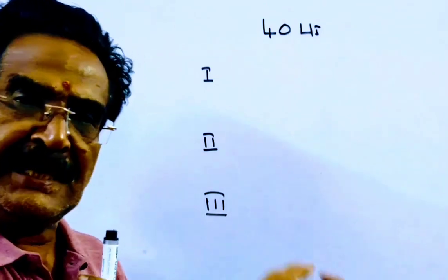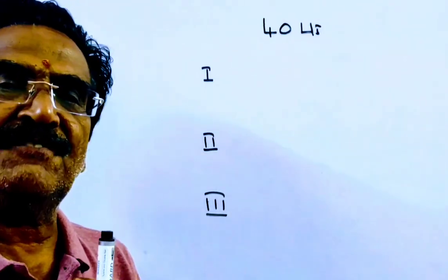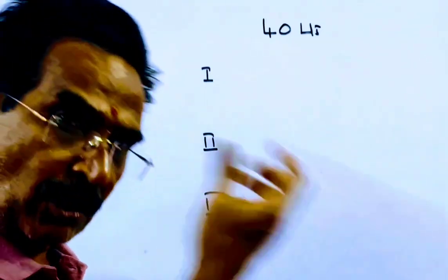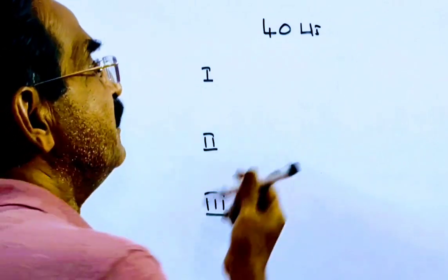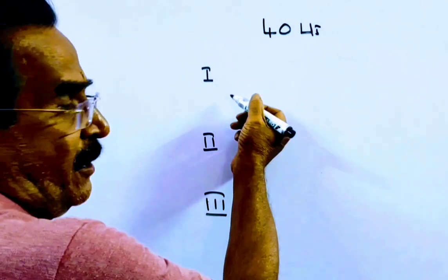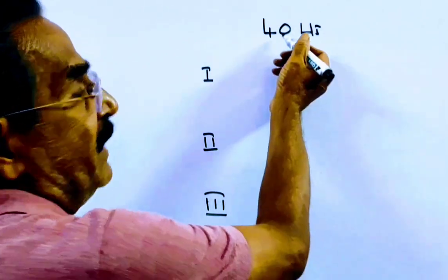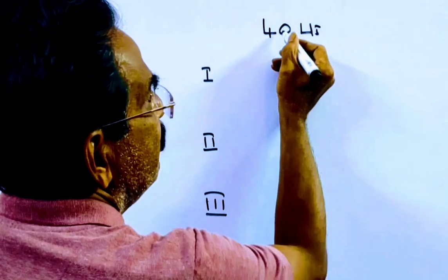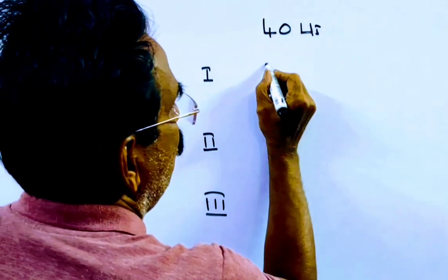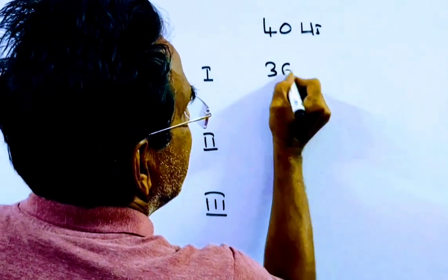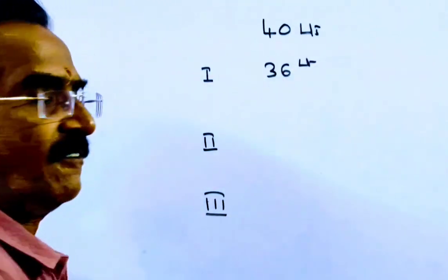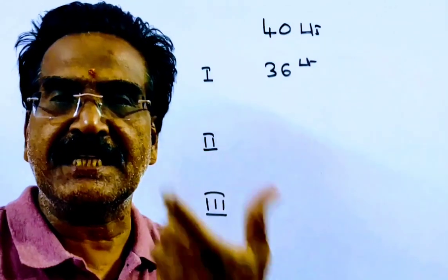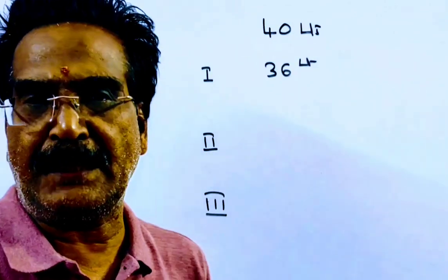That means every time 1 tenth of the remaining milk will be drawn out. After the first operation, 1 tenth of 40 is 4 liters. So 40 minus 4 equals 36 liters of milk remaining.